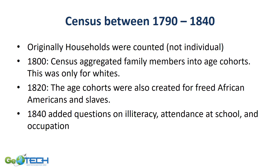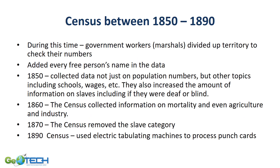There were also questions about education attached to the United States Census. Questions could also be removed — after the Civil War, questions about slaves were removed. Technology also advanced alongside the census, with punch cards and electric tabulating machines used to process the data.